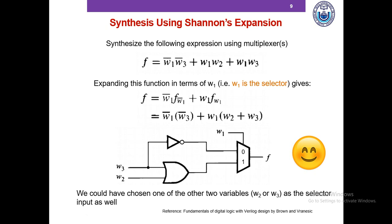One thing to note: we could have chosen any of the other variables, W2 or W3, as a selector input as well. The answers obtained from those choices would be perfectly valid as well.